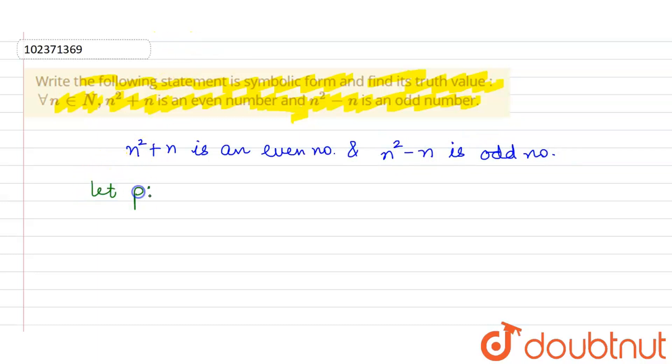Let P be: n² + n is an even number, where n belongs to N, that is natural number. And Q: n² - n is odd number, where n belongs to natural number.